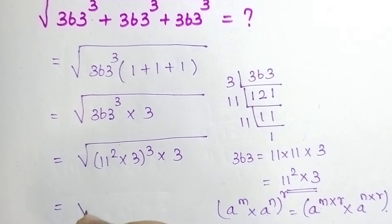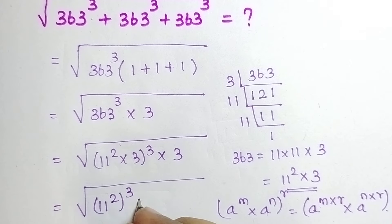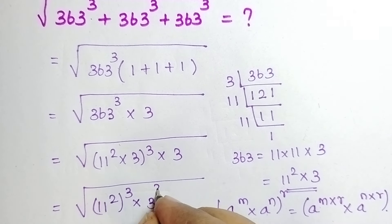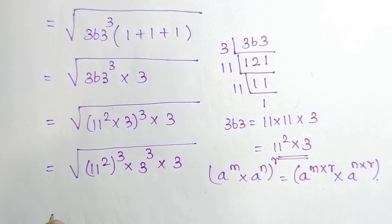So, this become the square root of 11 power 2 whole power 3 into, here 3 power 3 into 3. So, now, this is equal to, we know our rule.